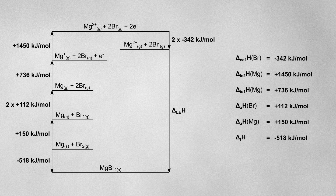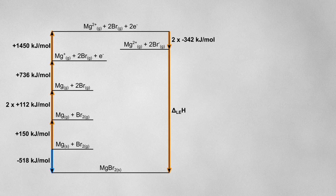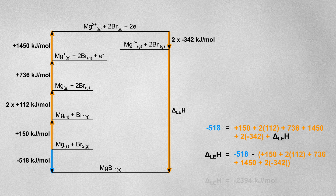Once all of those values are in place, we just need to find our two routes. Just as always, by following our arrows, we can see that the enthalpy of formation is equal to all of these other values. With a bit of rearranging, I can calculate the lattice enthalpy for magnesium bromide.